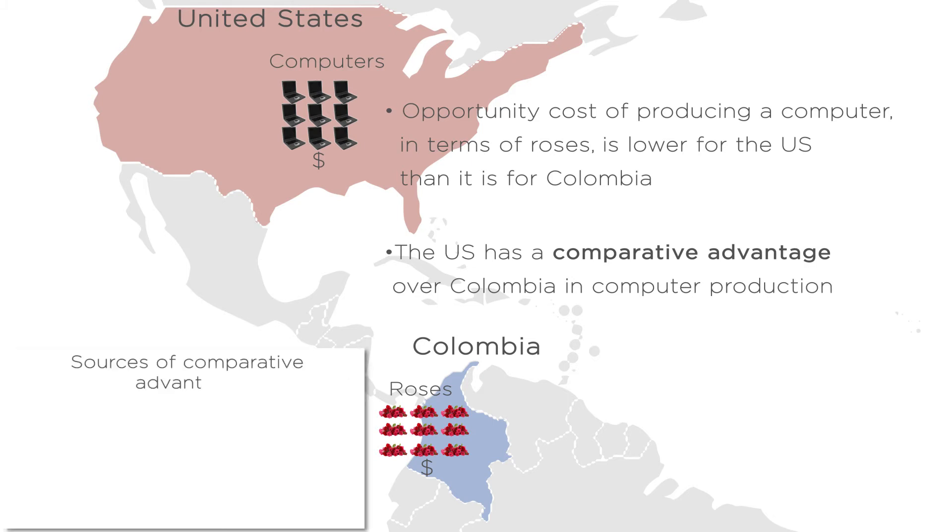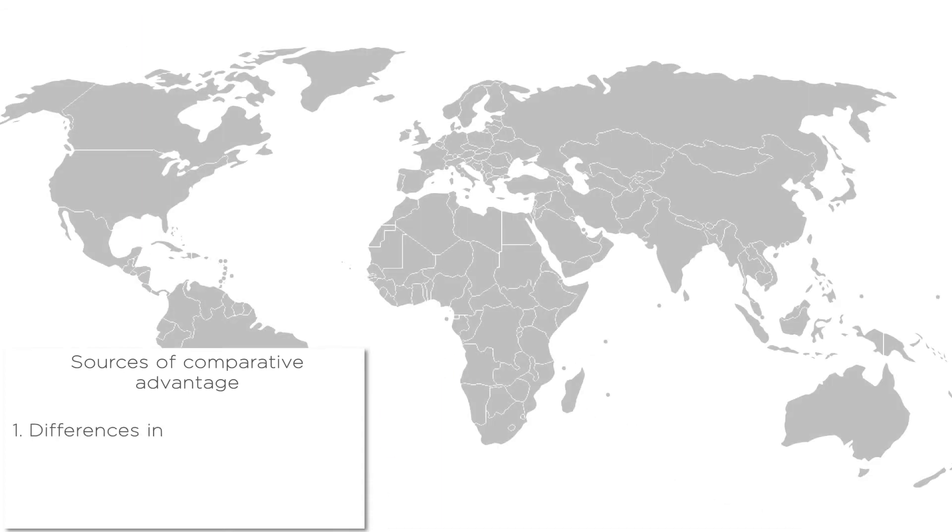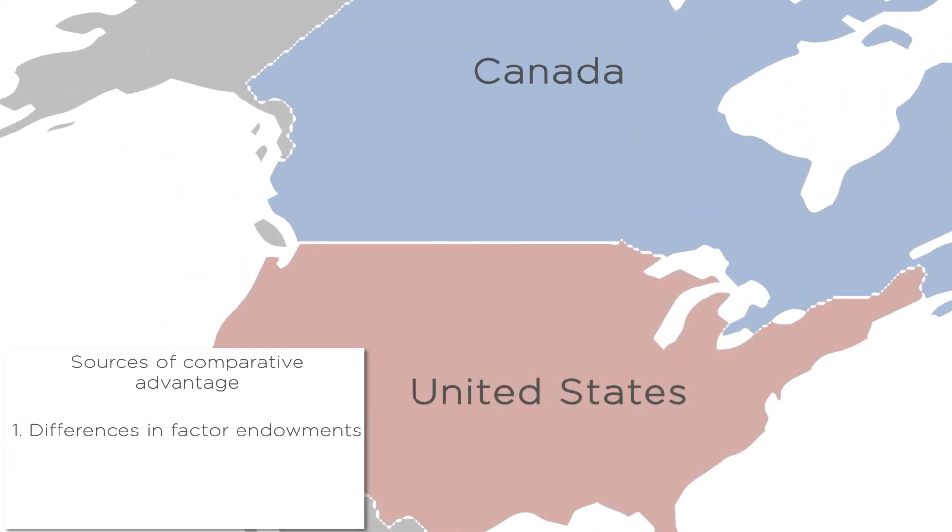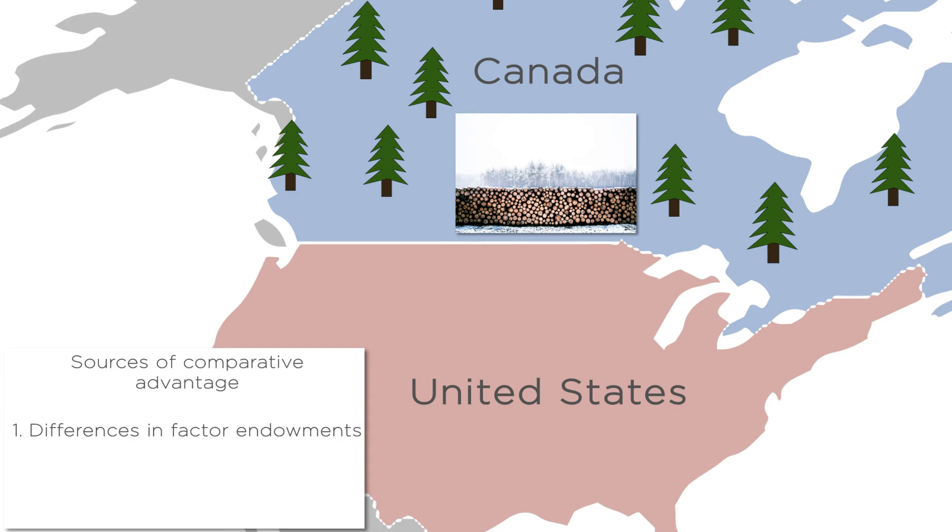These comparative advantages come from a couple of sources. First, countries can differ in factor endowments that can be used for production. For example, Canada and the U.S. are similar in many ways, but Canada is a much bigger exporter of lumber and paper products. This is because so much more of Canada is covered in forests, giving Canada a comparative advantage in that sector.